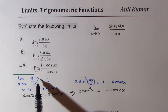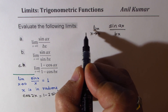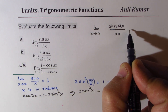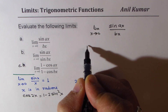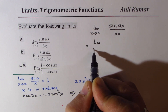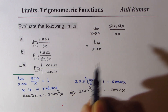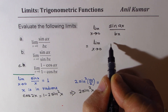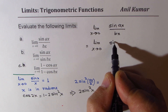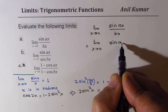The idea is to get it in the form sine theta over theta — same argument. We could write this as: limit x approaches 0. We want ax, so we could write sine of ax.